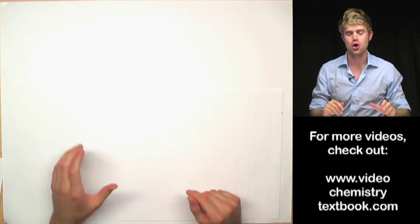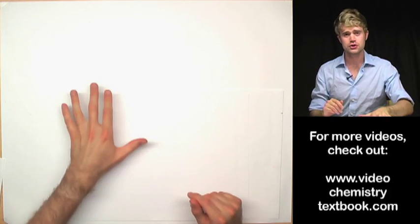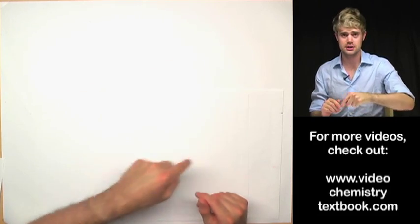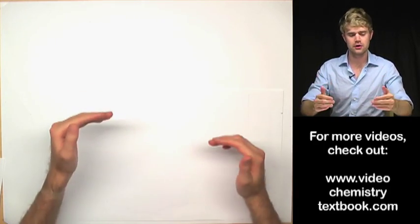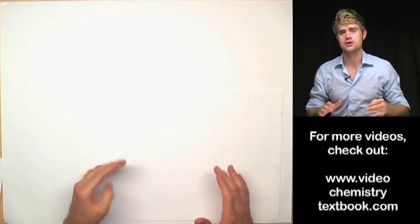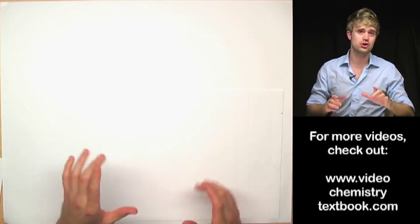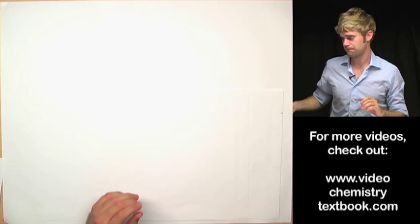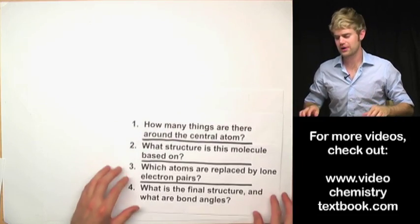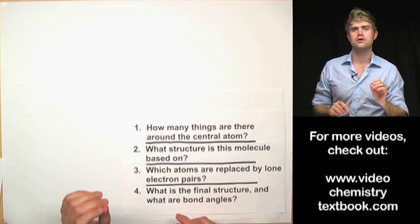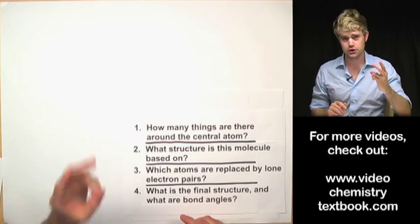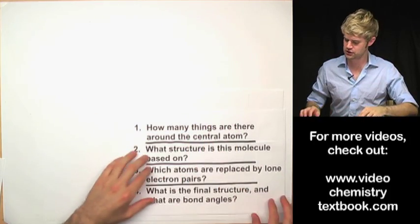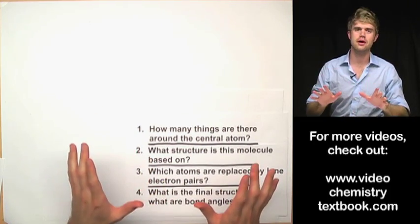Let's do some practice problems. We'll look at Lewis structures where the central atom is surrounded by either five or six things, and I'll talk you through the thought process for how to determine what the three-dimensional VSEPR shape for the molecule is and what the bond angles are. You might want to watch VSEPR videos part two and part three for the background information, just so that we're on the same page.